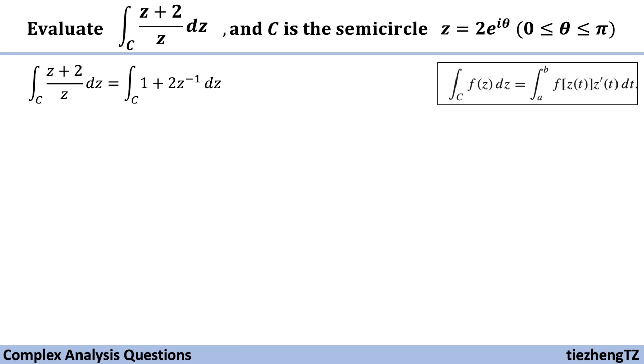So first, our equation z plus 2 over z equals 1 plus 2 times z to the power of minus 1.